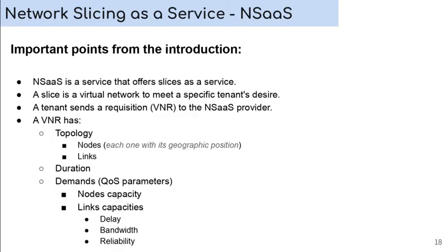Some important points from the introduction. NSaaS is a service that offers slices as a service. A slice is a virtual network to meet a specific tenant's desire. A tenant sends a requisition, VNR, to the NSaaS provider. A VNR has topology that contains nodes and links, duration, demands, or QoS parameters, like the nodes capacity, links capacity, delay, bandwidth, and reliability.